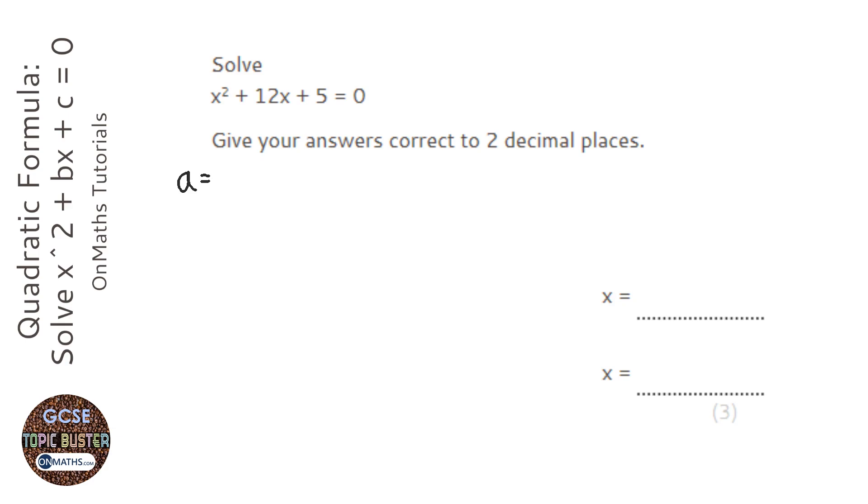a is the number before the x squared, well here it's 1x squared, we don't bother writing the 1, so a is 1. b is the number before the x term, which is 12, and c is the number on its own at the end, which is going to be 5.